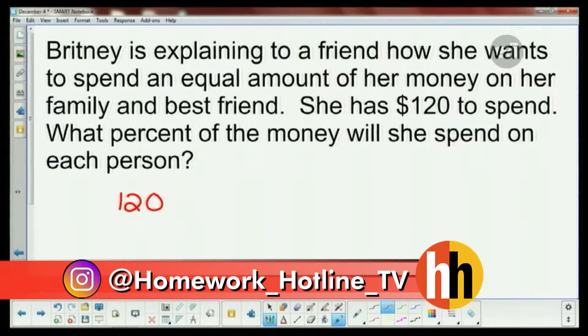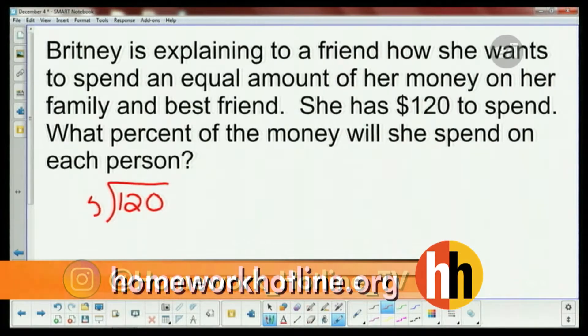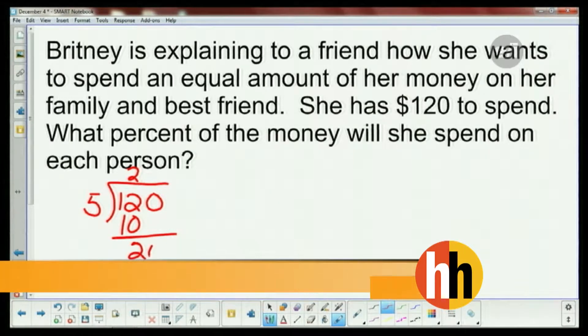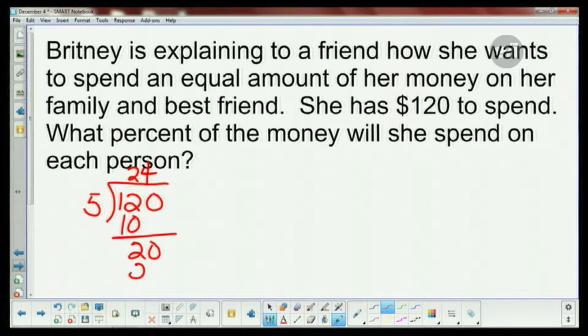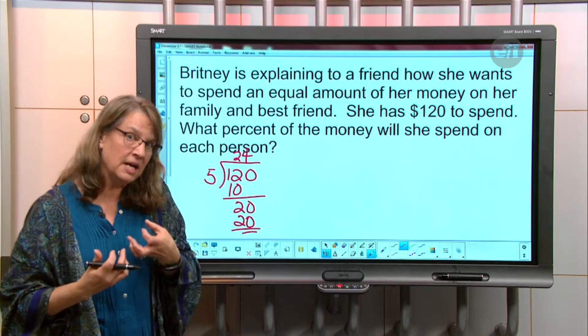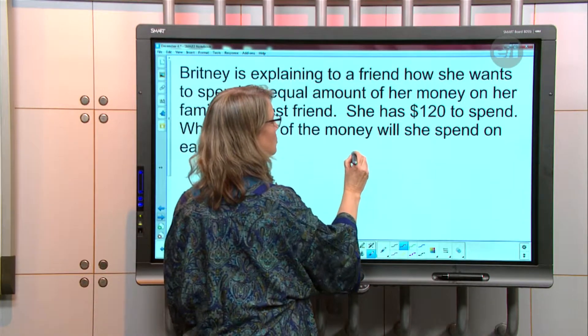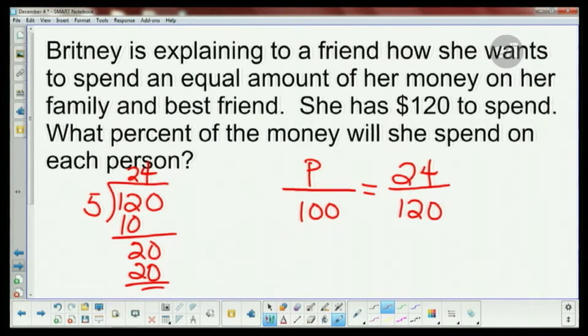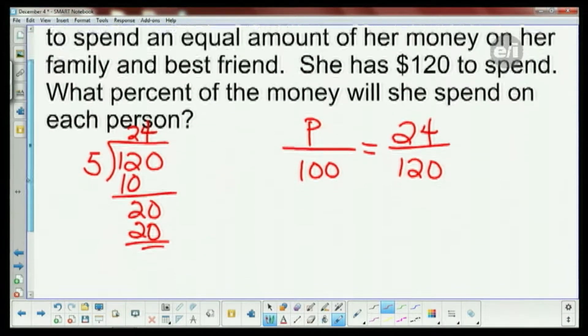If you remember, Laura did the tape diagram, so she actually figured it out. If I take the 120 and divide it by the five people that she's going to go with, you have $24 on each person. So we want to know what percent of the money that is. I'm gonna just put a P for percent over 100, and then you put your part over your whole.